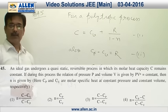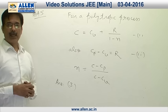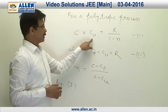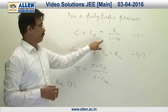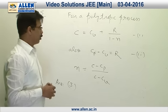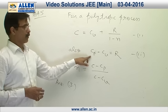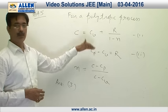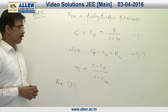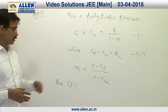Question number 45, for a polytrophic process, molar heat capacity is given by CV plus R upon 1 minus N, where N is polytrophic constant. Also, CP minus CV is R. On substituting the value of R from equation number 2 and solving for N, we will get this expression. Hence our answer is 3.